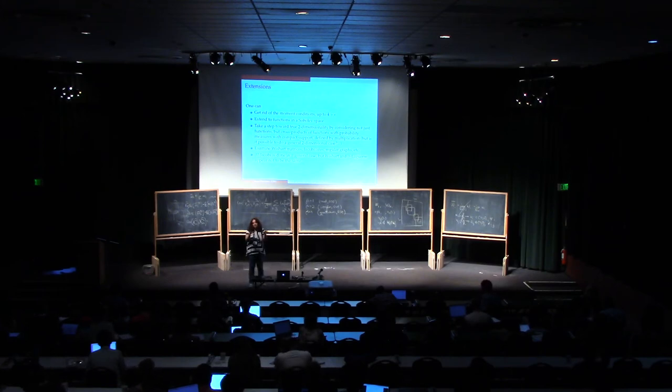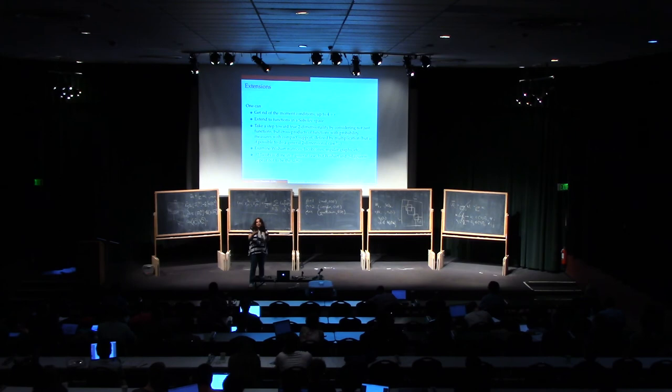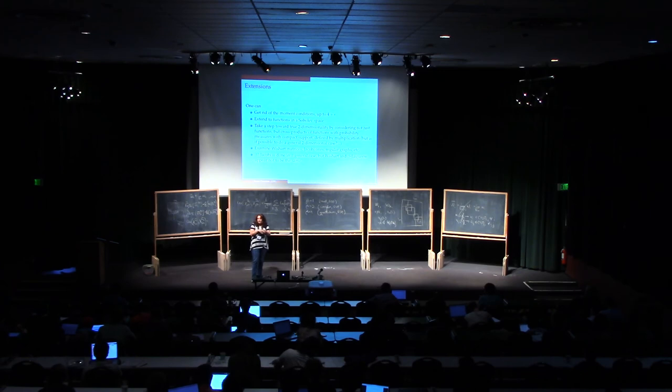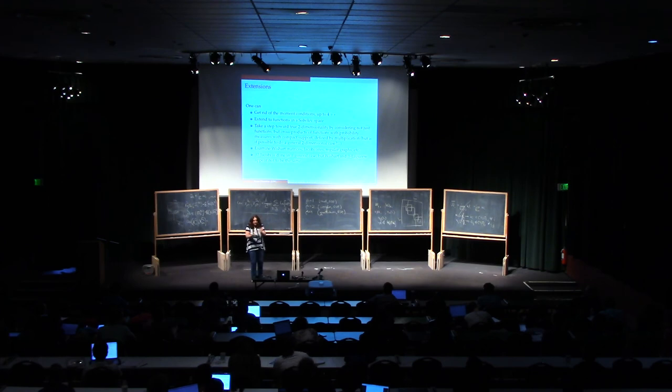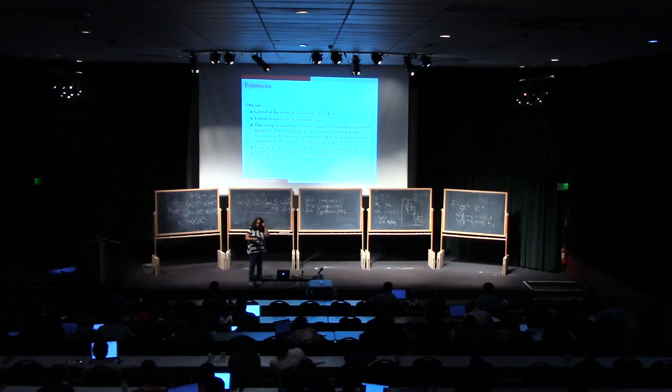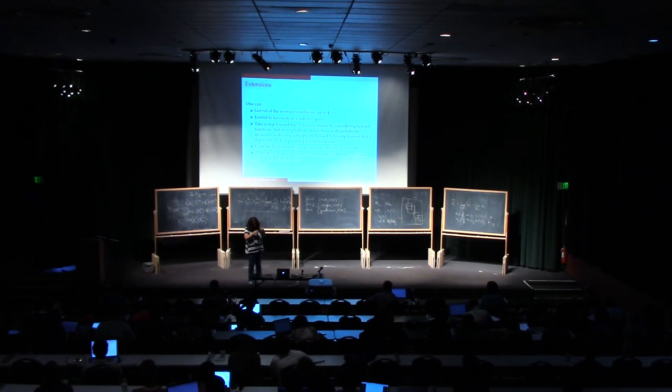I mean, you get other terms. It's provable that you're not going to get that. So there's, it's more general than the Gaussians, but you have these constraints on the moments, on moment matching. Yeah. Any other questions? Okay. So I guess we'll reconvene here in a few minutes with a research talk. Thank you.